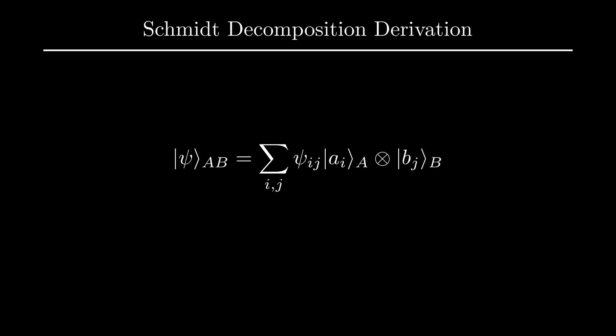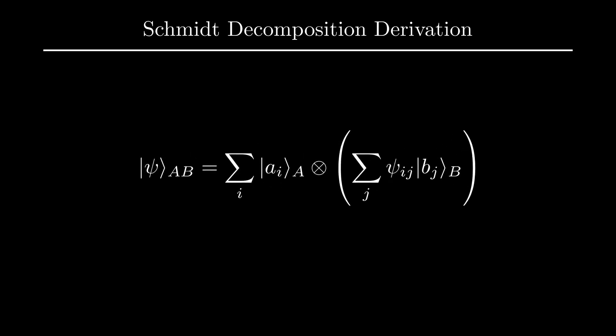Firstly, how do we derive this decomposition? Well, start with the arbitrary decomposition of psi we mentioned previously. We can rewrite the sum over vectors AI tensored with linear combinations of vectors BJ, which we will define as vectors tilde BI. Note that these vectors tilde BI are not necessarily orthogonal or normalized.